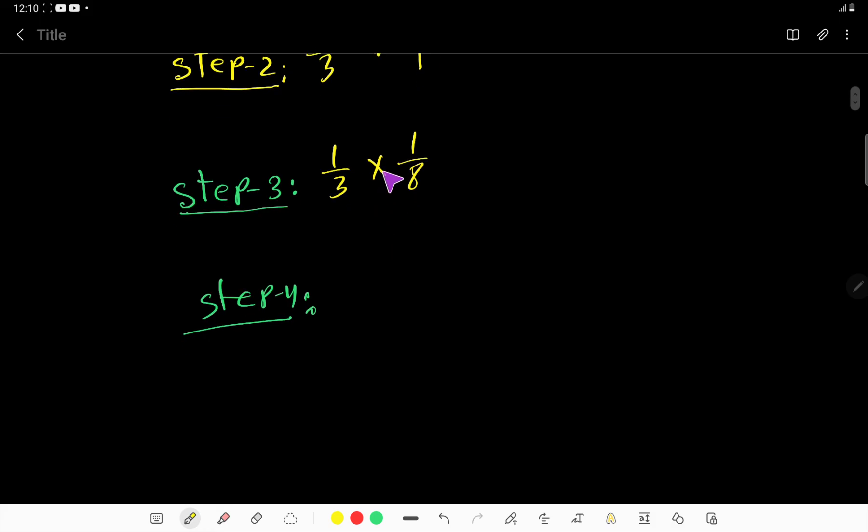Now we have to apply the multiplication rules of fractions. So we have to multiply top to top and bottom to bottom. So we are getting here 1 over 24.